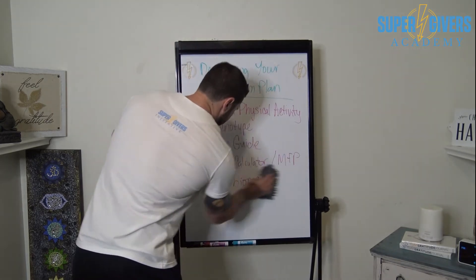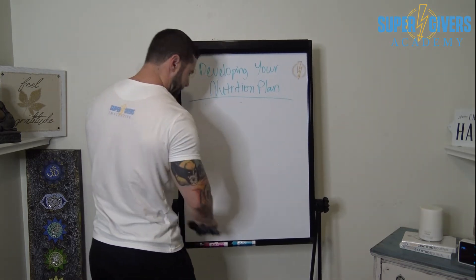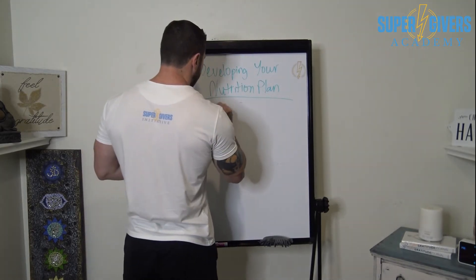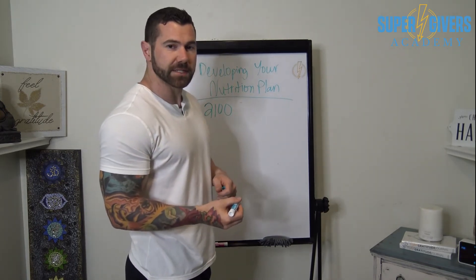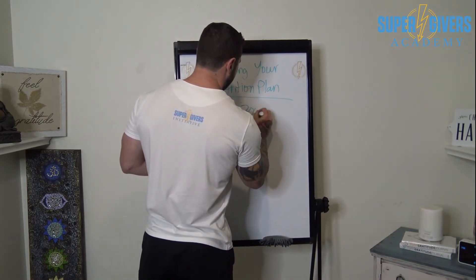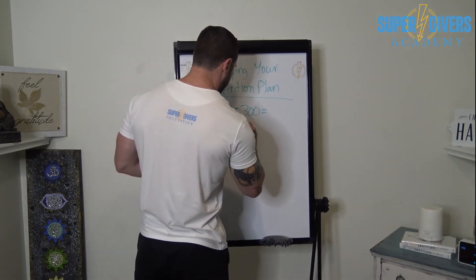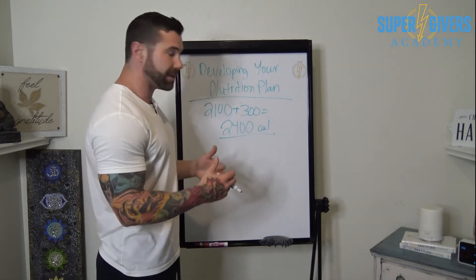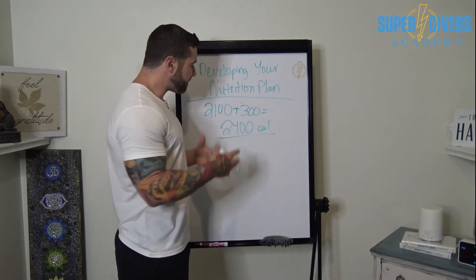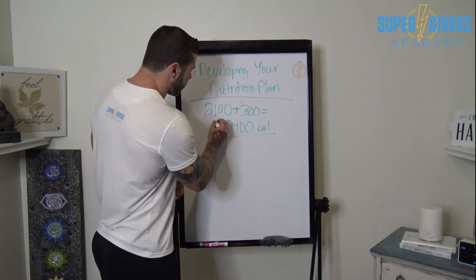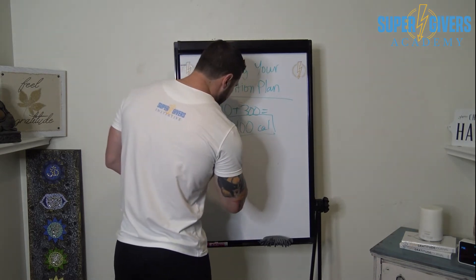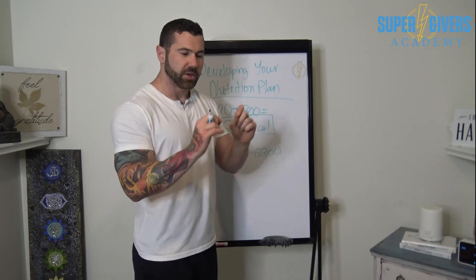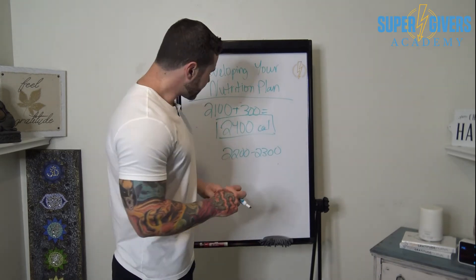Let's write it down. We figured out that your BMR in this hypothetical situation is 2,100 calories, and you're burning 300 calories during the workout, which equals a total of 2,400 calories. So if you would like to lose weight, you need to be eating less — in a caloric deficit. You'd want to ingest anywhere between 2,200 to 2,300 calories, just below that number, and by doing that consistently you're going to start losing weight.